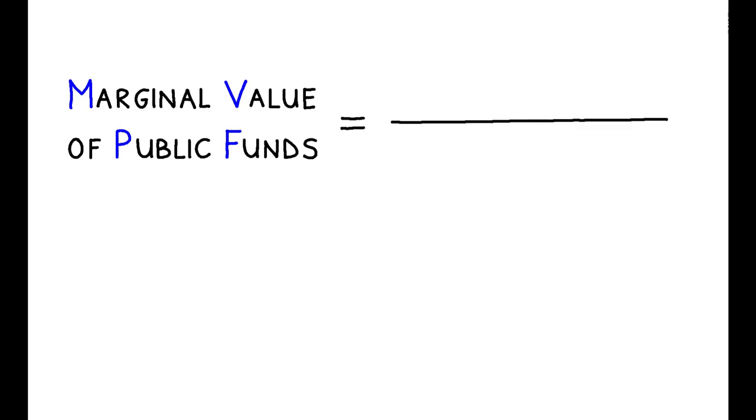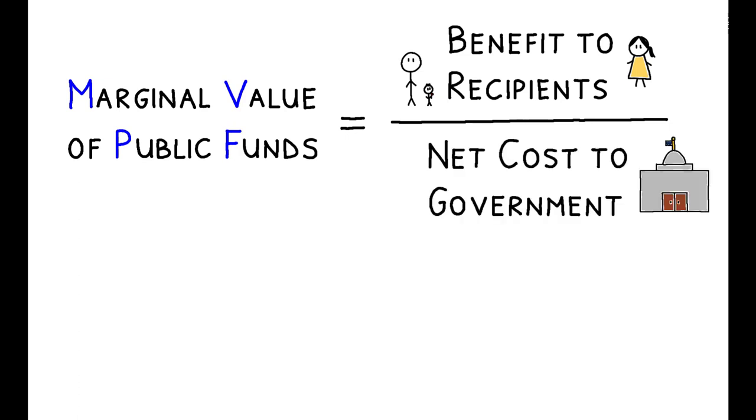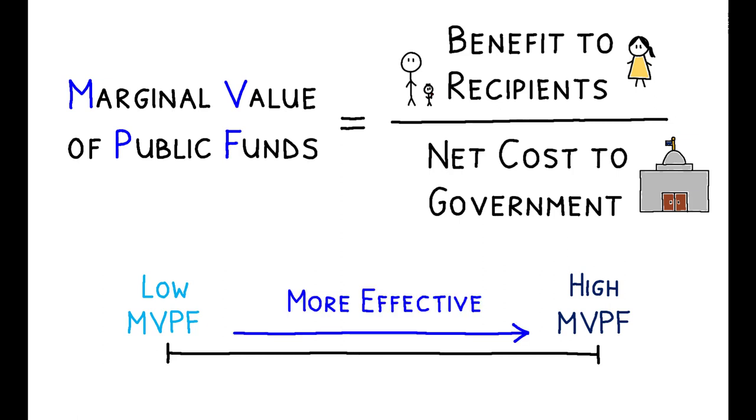This is the ratio between the benefit that a policy provides to its recipients and its net cost to the government. Policies with higher MVPFs are more effective in the sense of providing greater benefit per dollar of government spending. In essence, they have greater bang for the buck.